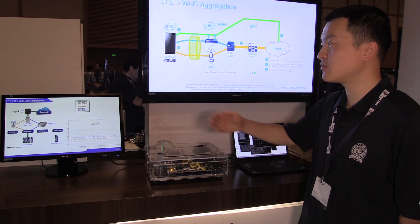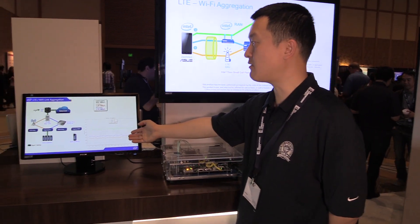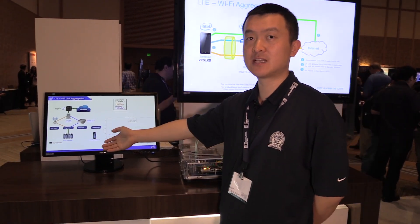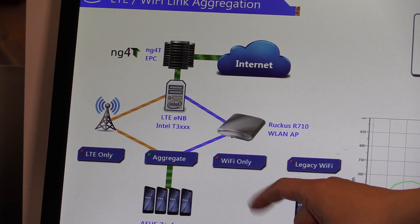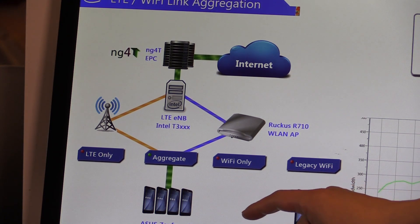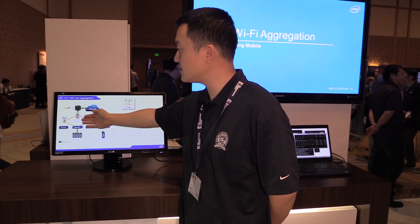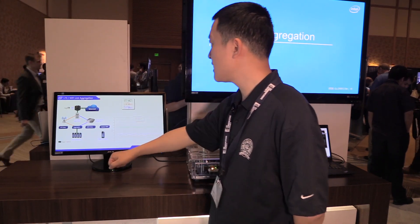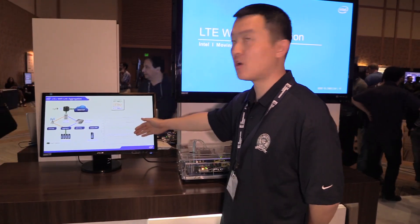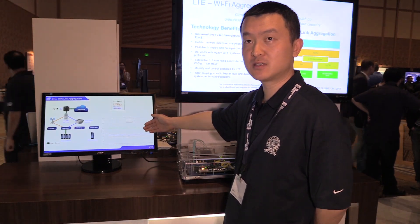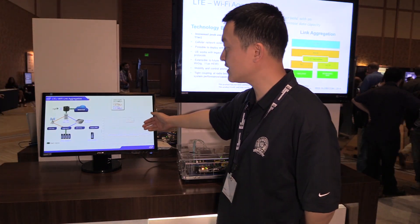Here we are showing our end-to-end demonstration system, from the EPC to the LTE base station and the Wi-Fi access point. We're using an Intel-based smartphone. And as you can see here, this is showing how the throughput performance looks like.